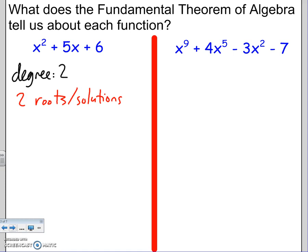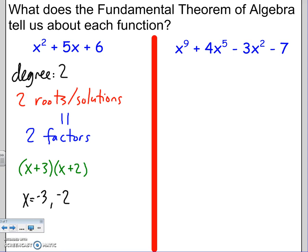They could be repeats. If there are 2 roots or 2 answers, you should also know that means there are also 2 factors. You can turn every root into a factor by doing the opposite. If I wanted to solve it, I could factor — by guess and check I see that's (x + 3)(x + 2). So there are 2 factors and 2 solutions or roots: x = -3 and x = -2. The highest exponent, the degree, tells you how many solutions, roots, and factors there are.